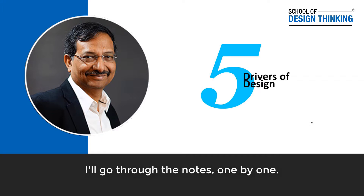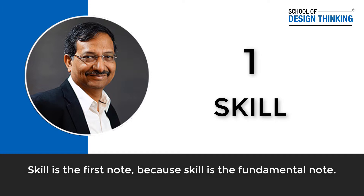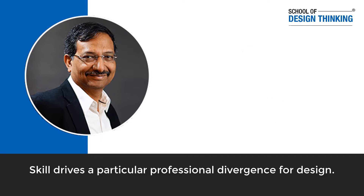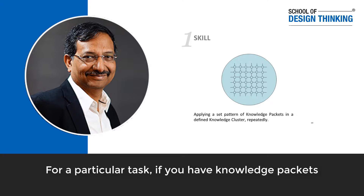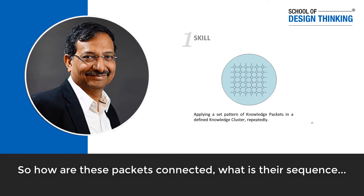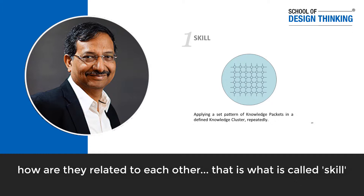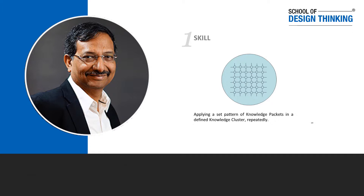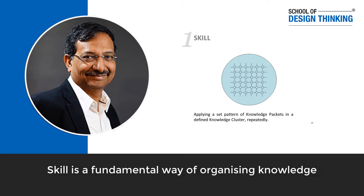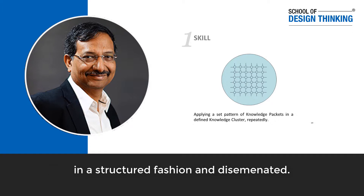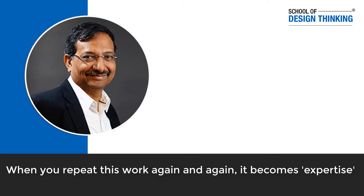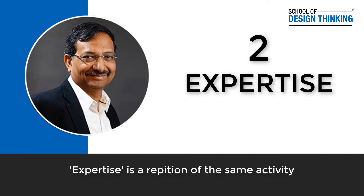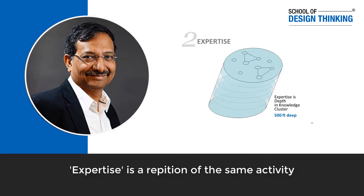I'll go through the 13 notes one by one. Skill is the first note because skill is a fundamental of it — it drives a particular professional divergence for design. What is skill? If you have a knowledge packet for a particular task, how do those knowledge packets get connected? What is the sequence and relationship between them? That's skill — a fundamental way of organizing knowledge into a structured fashion and disseminating it. When you repeat this work again and again, it becomes expertise. Expertise is the repetition of the same activity.